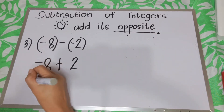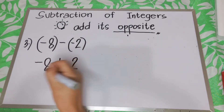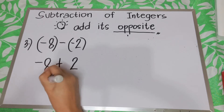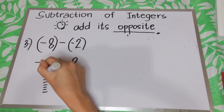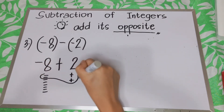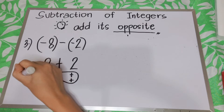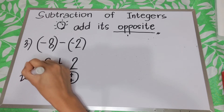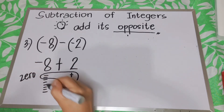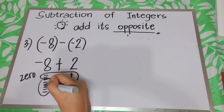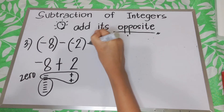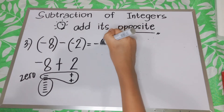From what we have studied about addition of integers, we count: 8 negatives and then 2 positives. A pair of positive and negative is equivalent to 0. So we cancel 2 pairs, and what's left is 6 negatives. Therefore, the answer is negative 6.